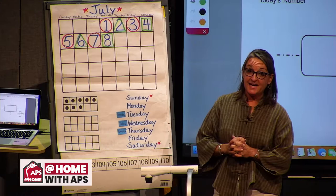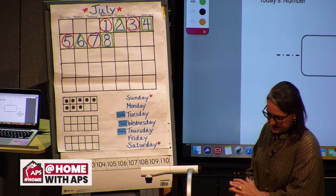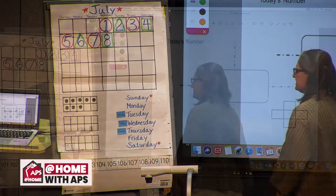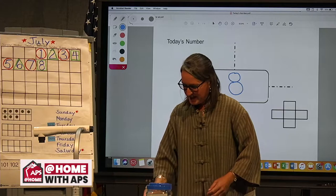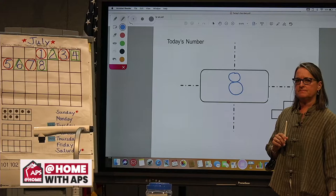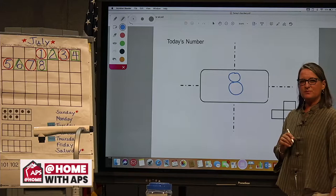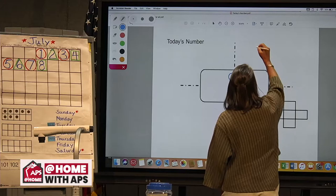Our number of the day is eight. It is a one-digit number because we haven't yet made it to a 10. How many are we away from 10? Just two. Now, how do we write eight as a word? It sounds short and sweet, but it's long and complicated. Eight sounds like it starts with an A, but it starts with an E — that's pretty tricky. And the next letter is an I.